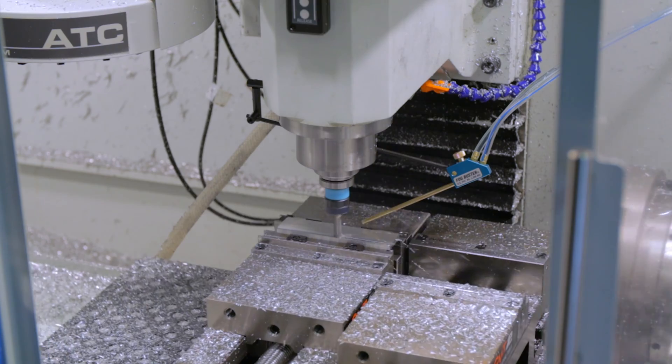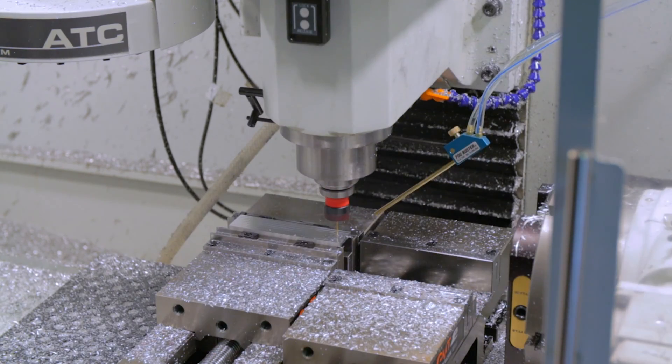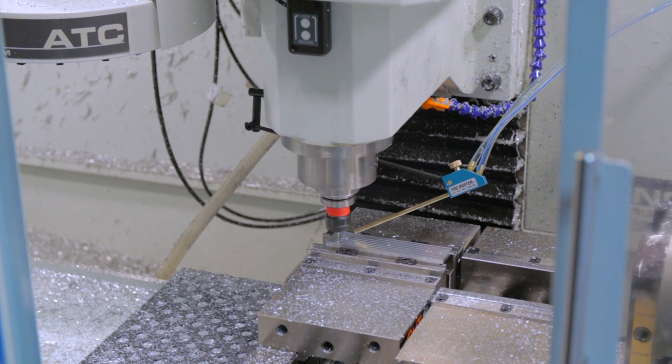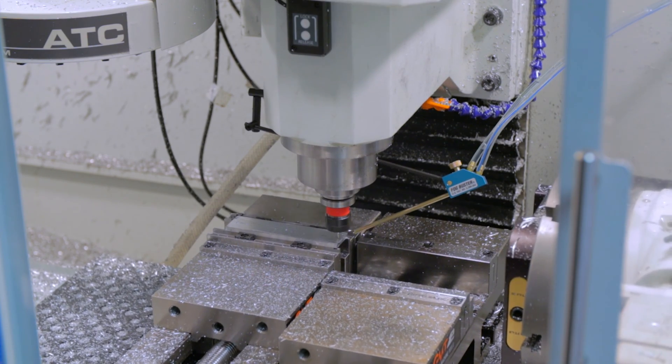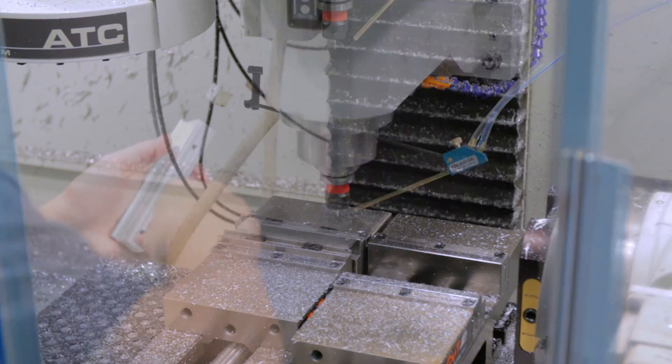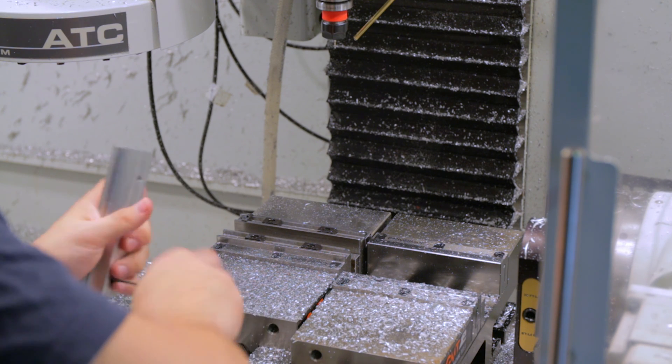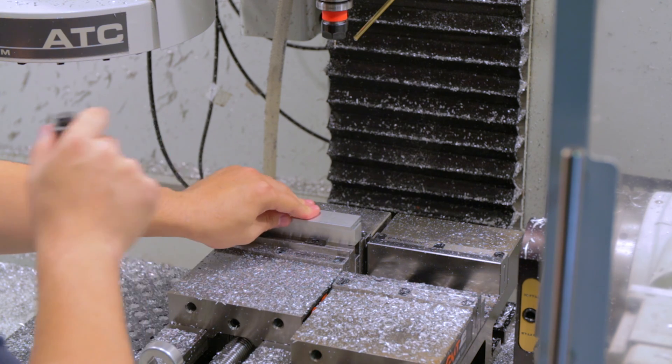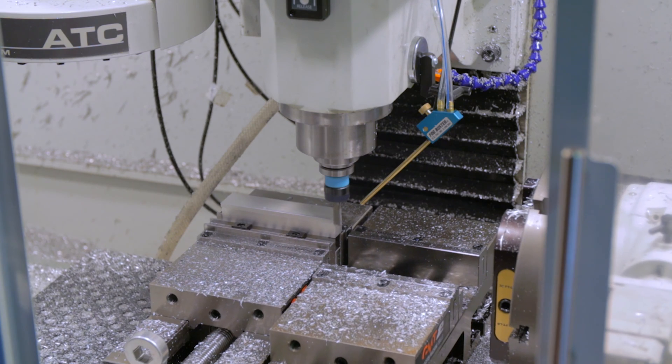The first step in making the handles is to face the part and drill some holes. The only problem is I have to take the fixture out of the vise in order to put the handles on each time. So I used a torque wrench to try to be consistent. But now I can work on the entire outside of the part.